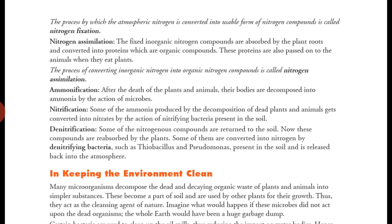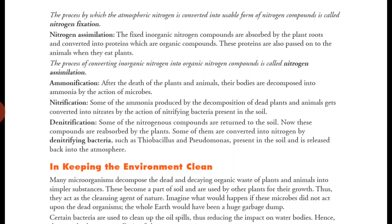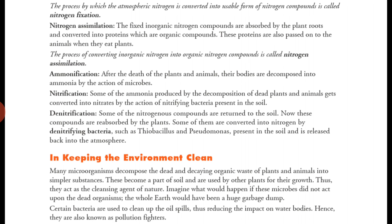The third process is ammonification. Plants and animals have taken up nitrogen in some form — the food plants prepared was in the form of proteins, which are organic nitrogen compounds. After the death of plants and animals, their bodies are decomposed into ammonia by the action of microbes. Ammonification means the organic nitrogen in the bodies of dead plants and animals is converted back into ammonia, which is an inorganic nitrogen compound.